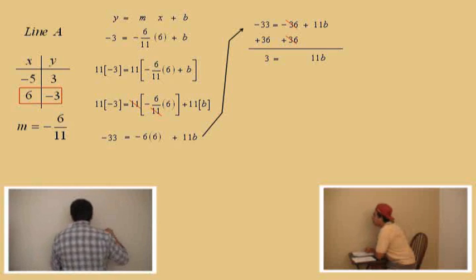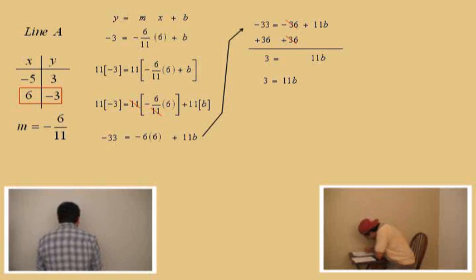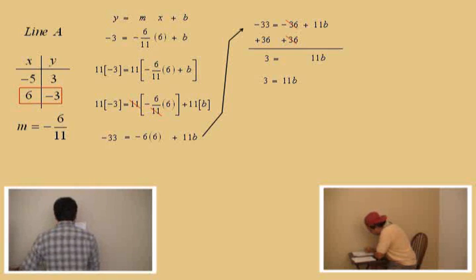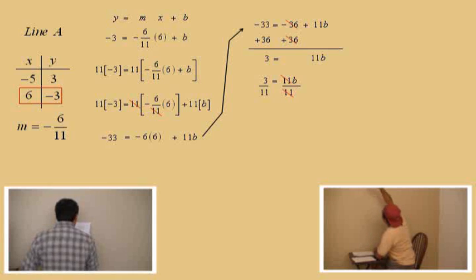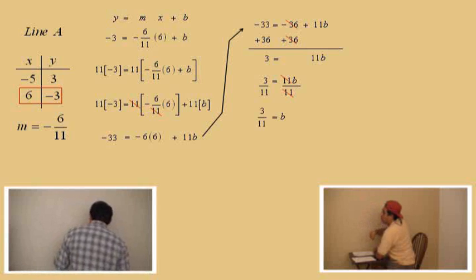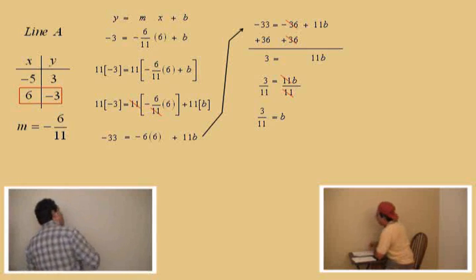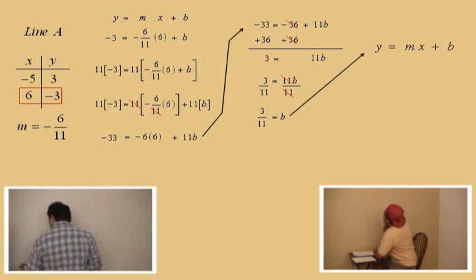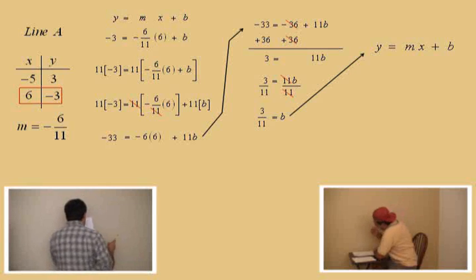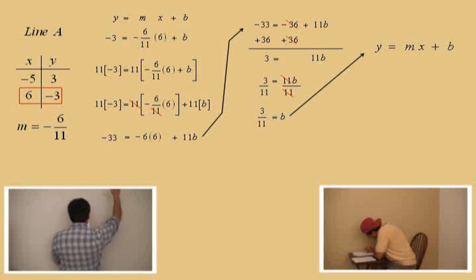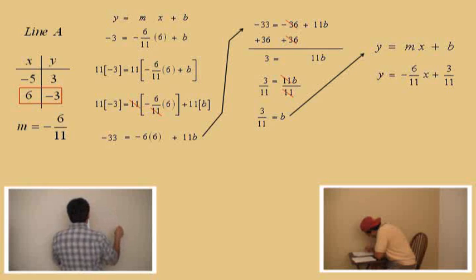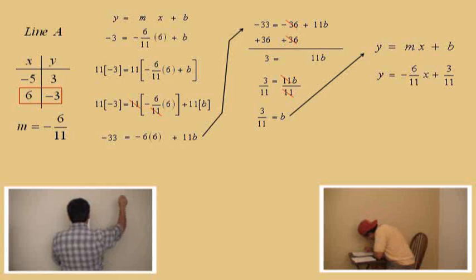So, let's list our equation. We have three equals eleven B. How do we solve for B, Charlie? Divide both sides by eleven. Those elevens cancel out, leaving you with three elevenths equals B. Very nice. So now we have the B value. Our equation was y equals mx plus b, and now we're going to plug everything in. Y equals negative six elevenths — that's the m value — plus three over eleven. Your equation in slope-intercept form is y equals negative six over eleven x plus three over eleven.